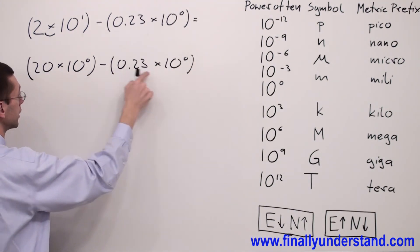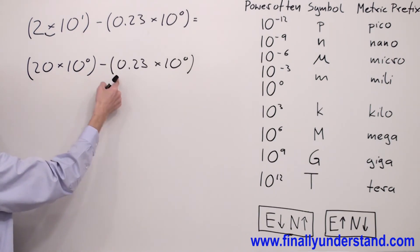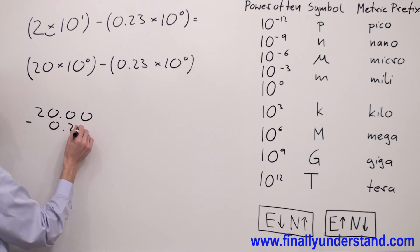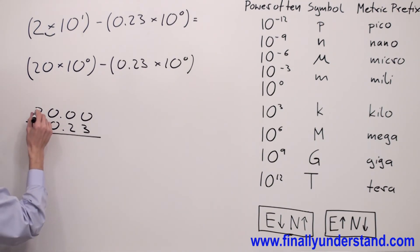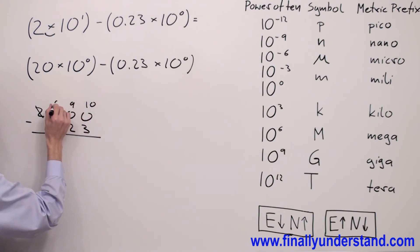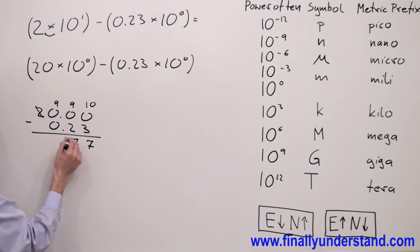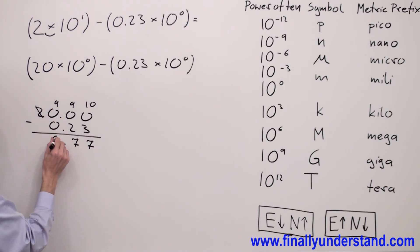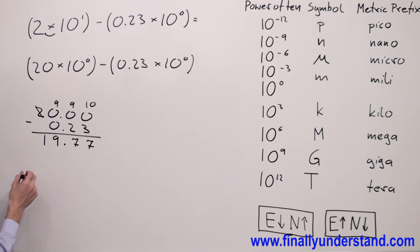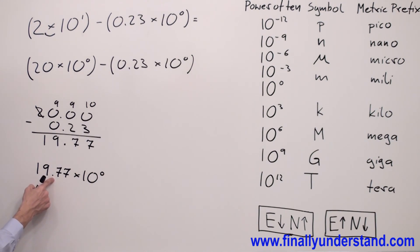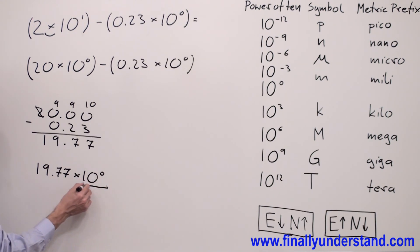Now I have exactly the same powers of 10, so I can perform the subtraction of these two numbers. I have 20.00 minus 0.23. I have to borrow 1 from here — this becomes 10 over here and 9 over here. 10 minus 3 is 7. 9 minus 2 is 7. Bring down the decimal point, and I have 9 and 1. My final answer is 19.77 times 10 to 0. The number on the left side of the decimal point is between 1 and 999, and the power of 10 has exponent 0, so this is the correct answer.